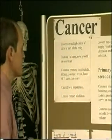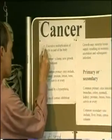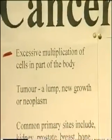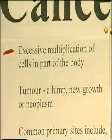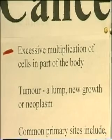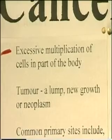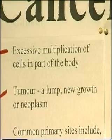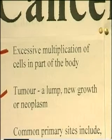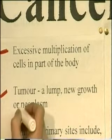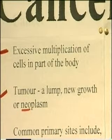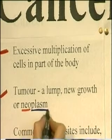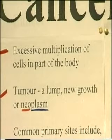So, excessive multiplication of cells in part of the body — common to all types of cancer — the result is a tumour. The term tumour literally means a lump; it's a new growth. 'Neo' means new, 'plasm' means tissue — new tissue. But of course, as we're going to see, it is very abnormal, very pathological tissue.